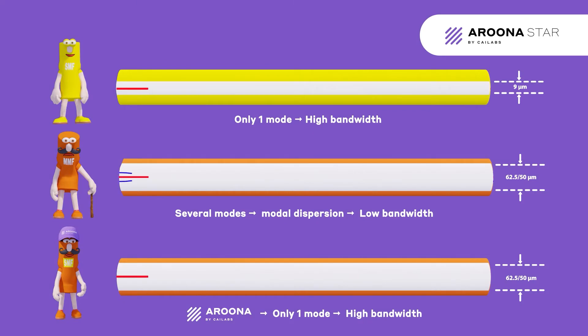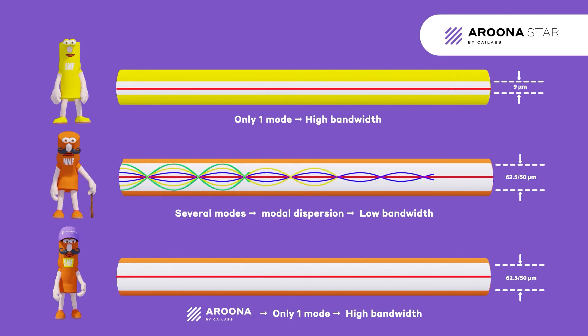Let's take a closer look at how these fibers work. The main difference between a single-mode fiber and a multimode fiber is the size of the core. The core of the single-mode fiber has a smaller diameter, which requires the light to propagate on a single optical path.